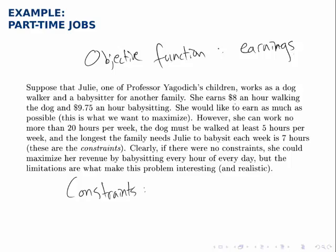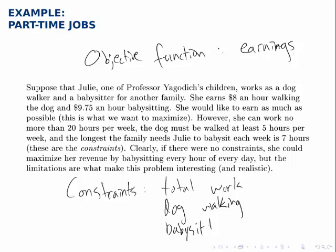The objective function is stated as her earnings, and we're told some information about how she earns money: $8 an hour walking the dog and $9.75 an hour babysitting. The constraints we're given are that she can work no more than 20 hours per week — so she has a total work constraint. We're also told that the dog must be walked at least five hours per week, so there's a dog walking constraint. And the longest that the family needs Julie to babysit each week is seven hours, so there's a constraint on babysitting as well.